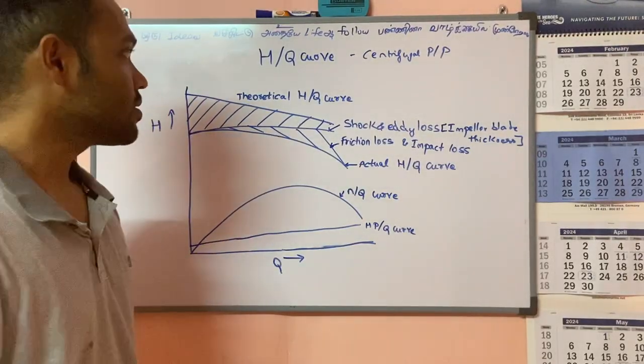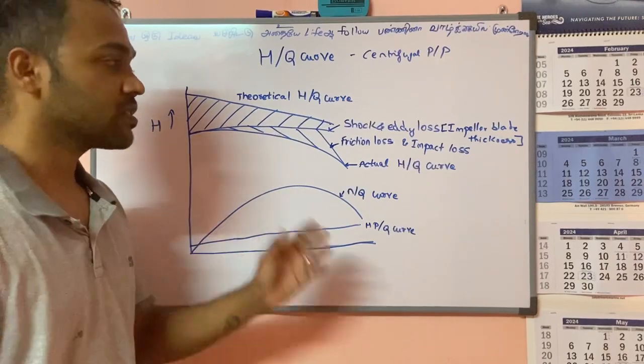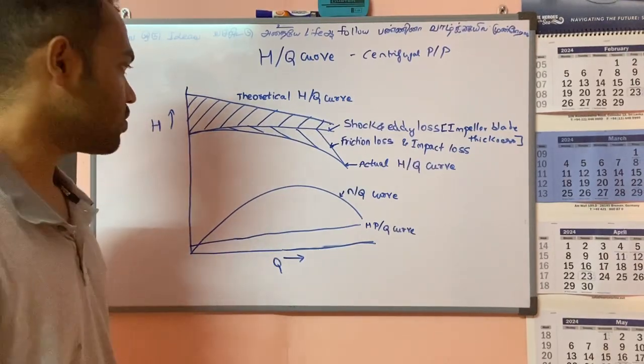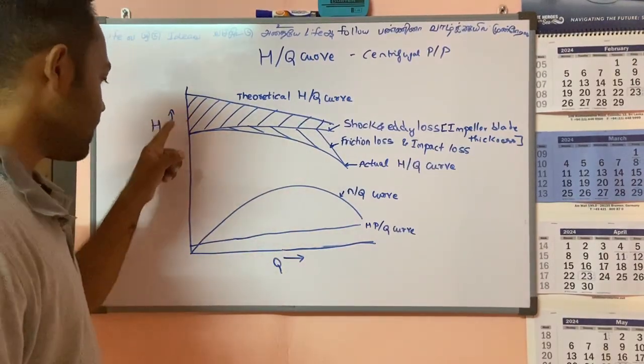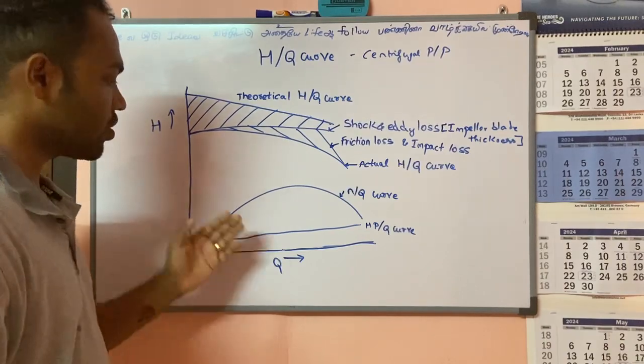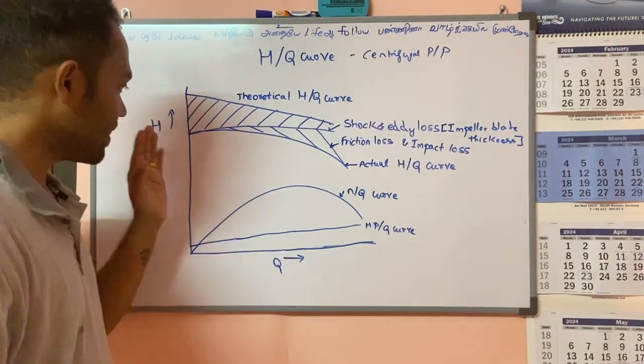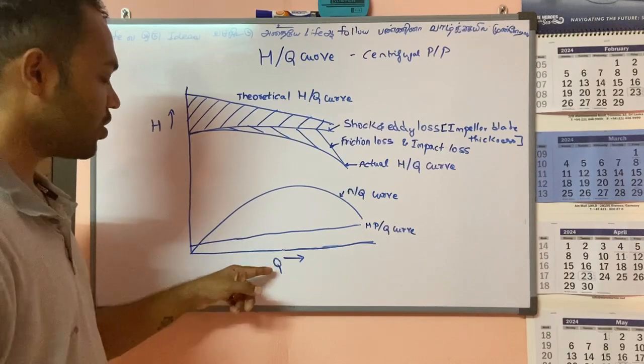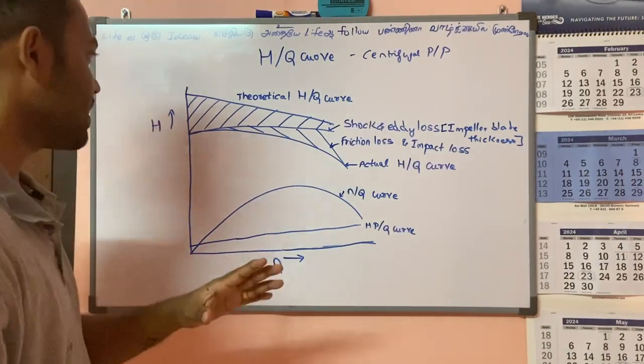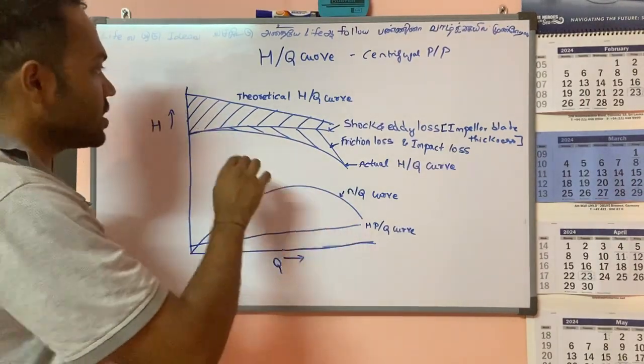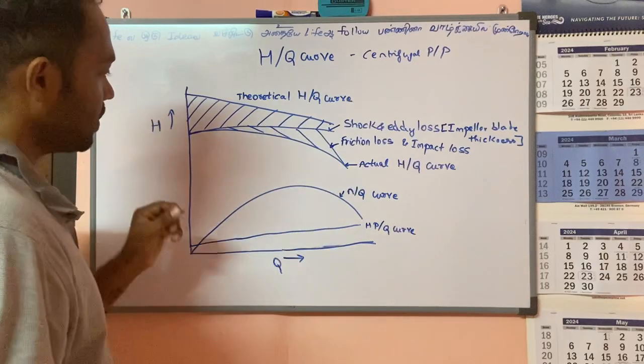Good morning guys. Today's topic is centrifugal pump characteristics curve. This is the H which is on the y-axis and the Q is on the x-axis which is the discharge. Q is the throughput. Theoretically, the H/Q curve is a straight line with minimum throughput happening at maximum head.